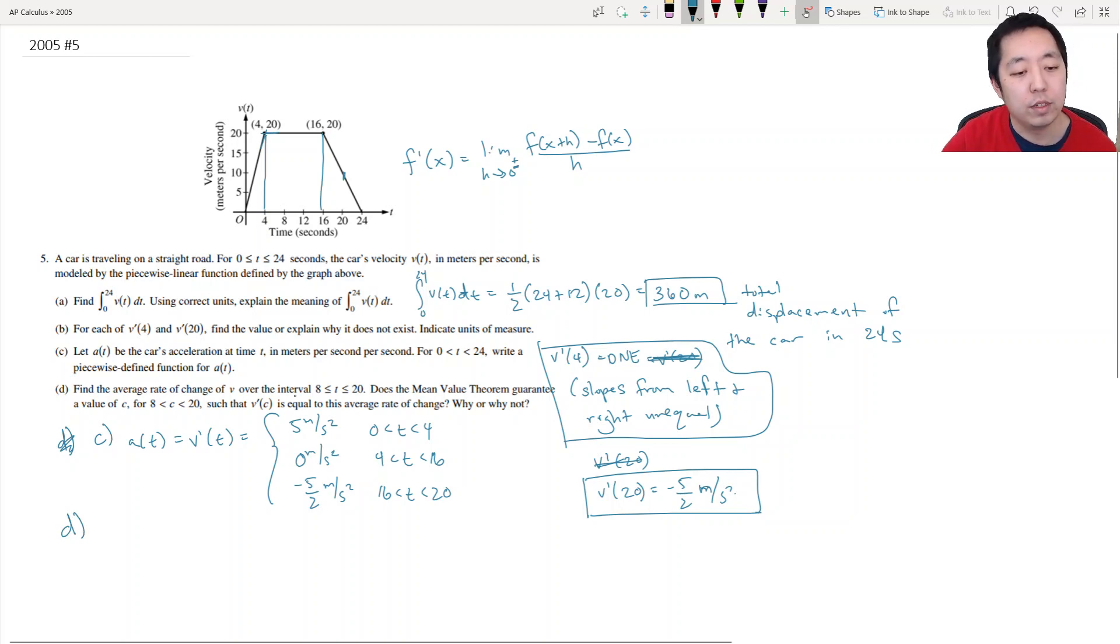Part D: Find the average rate of change of v over the interval 8 to 20. Does the mean value theorem guarantee a value of c? The average rate of change of v is the slope between x equals 8 and x equals 20, so here and here, for example. That's what the average rate of change is. V of 20 minus v of 8 divided by 20 minus 8. V of 20 is about 10, I think.